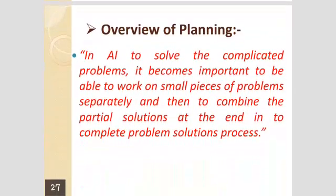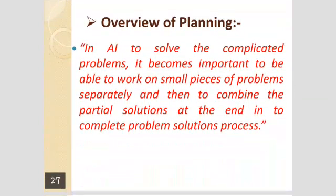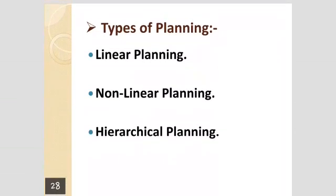In AI, to solve a complicated problem, it becomes important to be able to work on small pieces of the problem separately and then combine the partial solutions at the end into a complete problem solution. If you want to perform planning on a complex problem, the complex problem is divided into sub-problems and then the solutions are added into a final solution. There are different types of planning: linear planning, non-linear planning, and hierarchical planning.